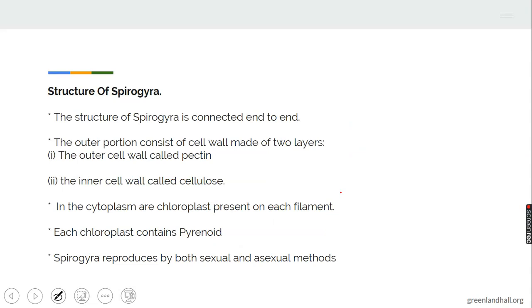The structure of spirogyra is connected end to end. The outer portion consists of the cell wall made up of two layers. The two layers, the outer one called the pectin and the inner one called the cellulose. In the cytoplasm, we have the chloroplasts present on each filament. Each of these chloroplasts contain what we call pyrenoid. Spirogyra will reproduce by both sexual and asexual method.